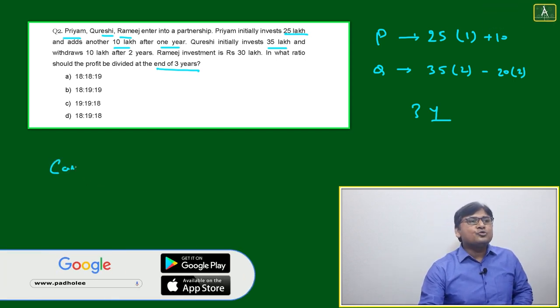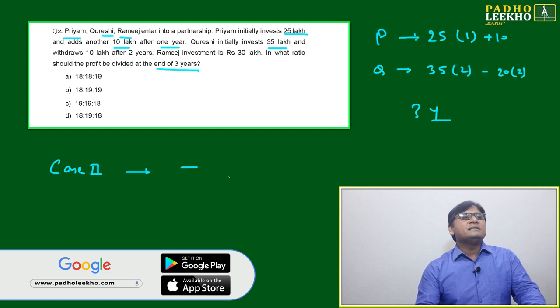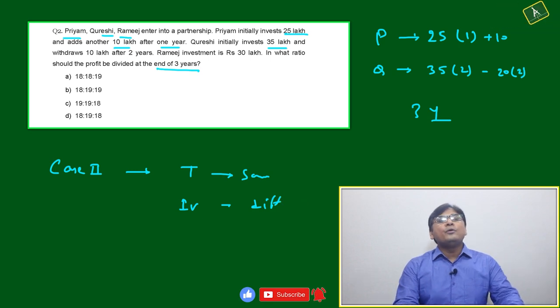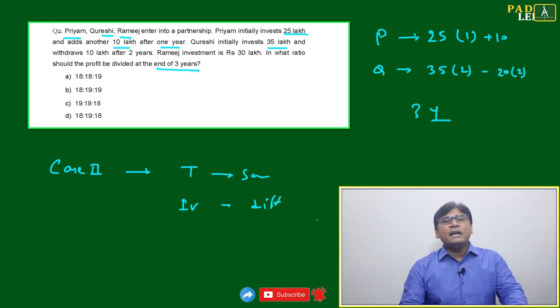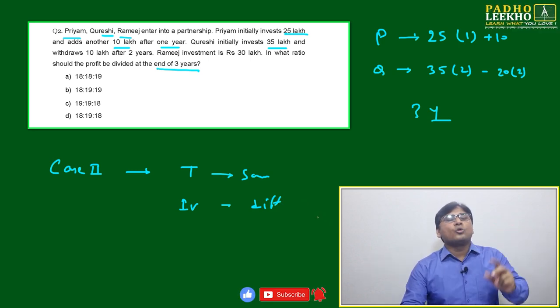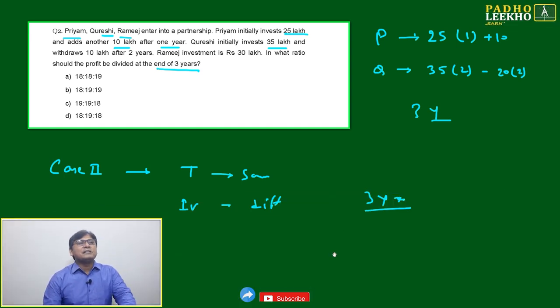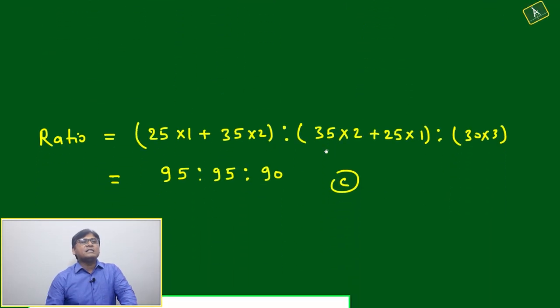This is case two, where time is same but investments are different. We will take the ratio of investments only, no need to take the ratio of time. We will calculate the total investment over three years for each individual - Priyam, Kureshi, and Rameesh - and then take the ratio.